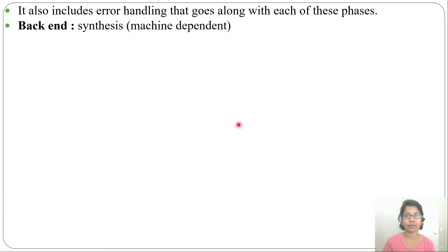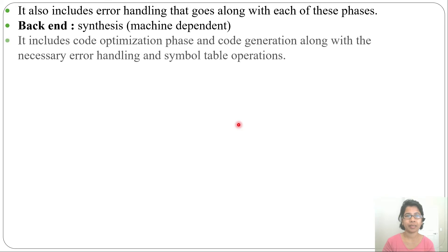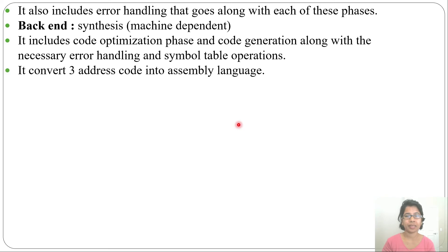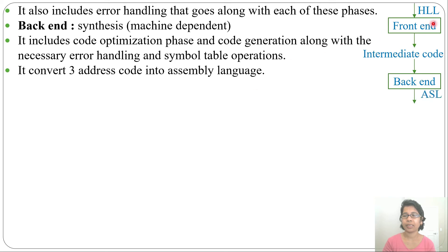The back end is also called synthesis or machine dependent. It includes the code optimization phase and code generation phase, along with error handling and symbol table operations. It converts three address code into assembly language. So the front end converts high level language into intermediate code, and the back end converts intermediate code into assembly language. In the next lecture, I will introduce all the phases with an example.